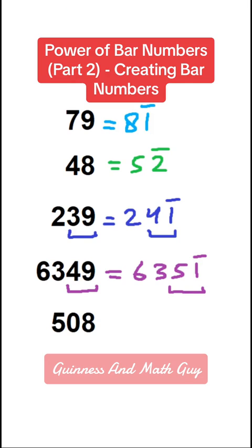And let us be careful here. This 508 will become 5, 1 bar 2 because this 0, 8 is 2 below 10. So here we have 10 minus 2.